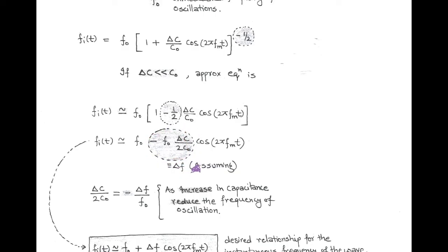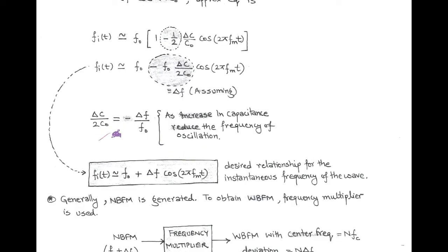After this assumption, we can write ΔC upon 2C₀ equals minus ΔF upon F₀. This relation shows that an increase in capacitance reduces the frequency of oscillation, because of the negative sign. The instantaneous frequency can then be written in terms of ΔF as: instantaneous frequency equals F₀ plus ΔF cos(2π fm t). This is the desired relationship for the instantaneous frequency of the FM wave.